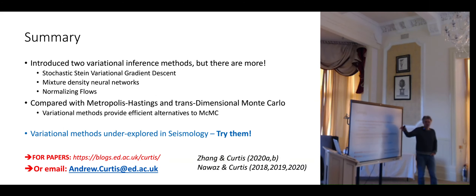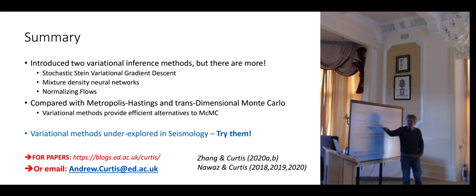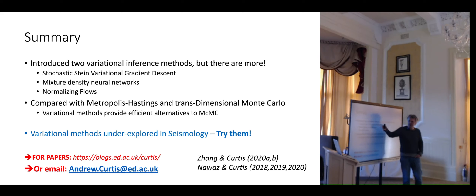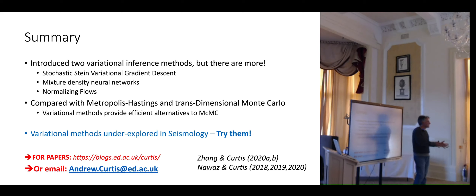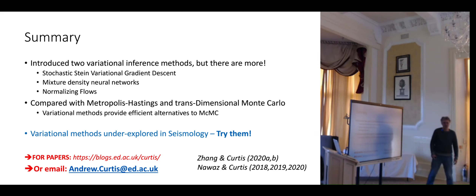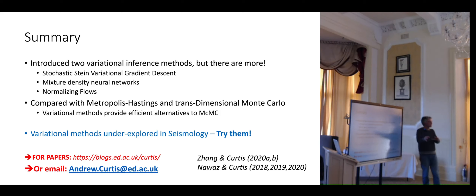To summarize, I've introduced variational inference and two representative methods — ADVI and SVGD — but there are many others: a stochastic version of SVGD, mixture density neural networks, normalizing flows, and more. This is a different strategy for solving Bayesian problems that uses optimization, and there are many flavors, just as there are for Monte Carlo or linearized methods. These methods are really underexplored in seismology — if you're interested, give it a shot, because at minimum you'll get a totally independent answer from your random sampling solution to see whether they agree.